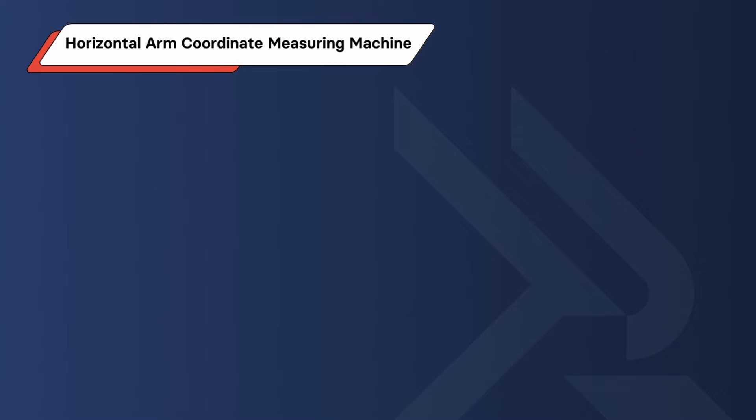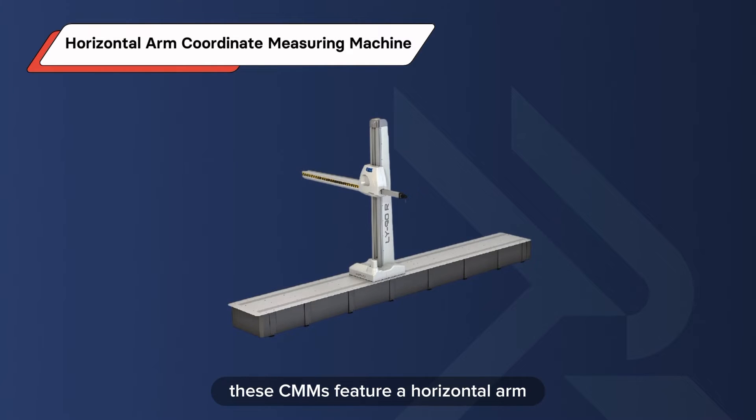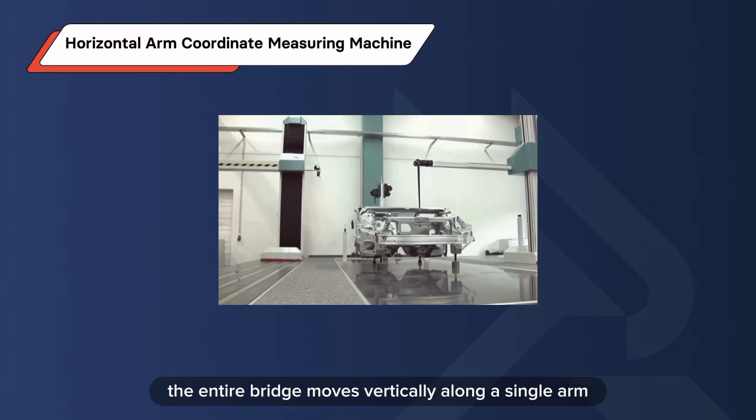Horizontal Arm Coordinate Measuring Machine. As the name implies, these CMMs feature a horizontal arm extending from a vertical column. Unlike the cantilever design, the entire bridge moves vertically along a single arm.